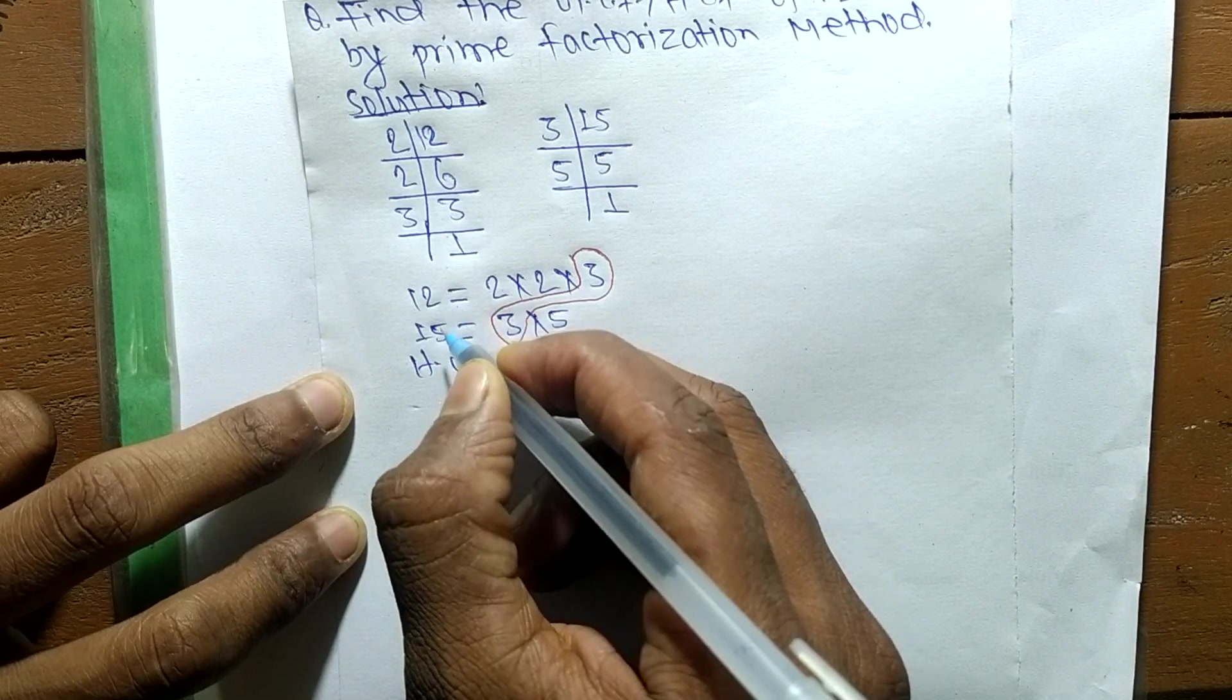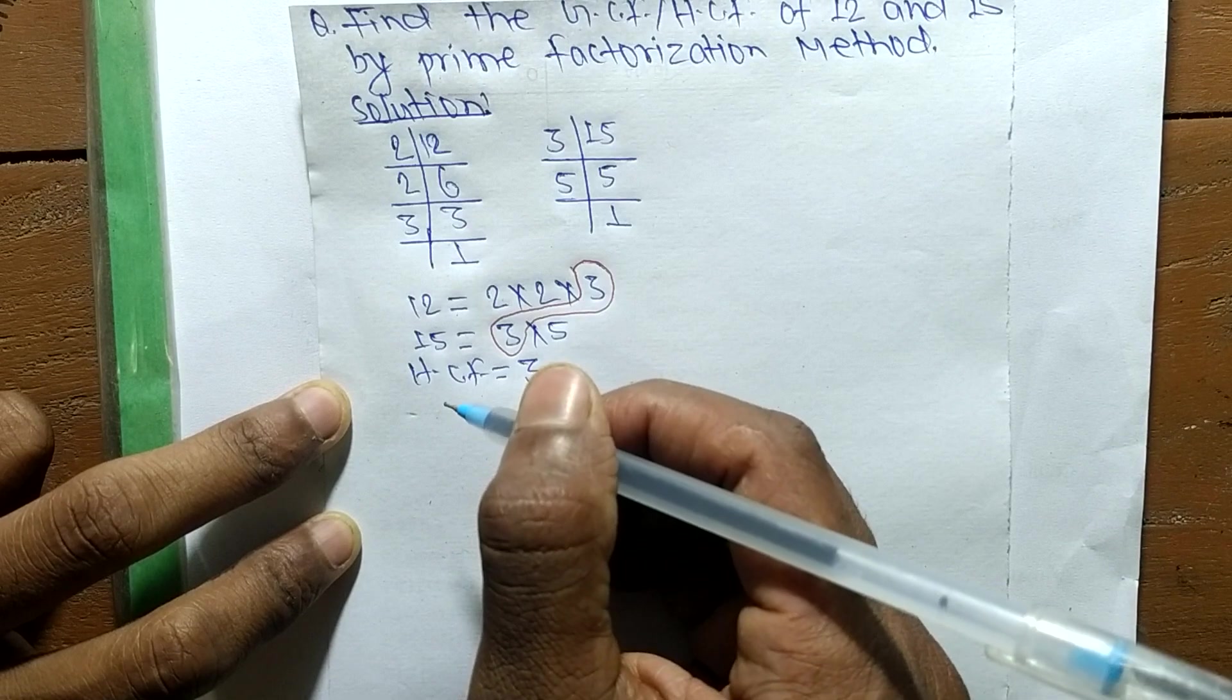So 3 is the HCF of 12 and 15. So this much for today and thanks for watching.